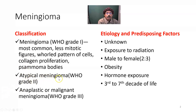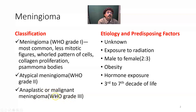Atypical meningioma, according to WHO Grade 2, will have around 10 mitotic figures per high power field. Anaplastic meningioma, WHO Grade 3, will have around 20 or more mitotic figures.